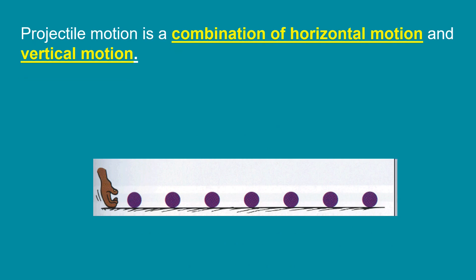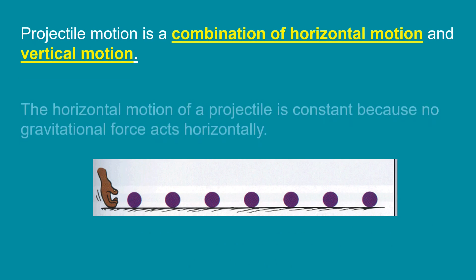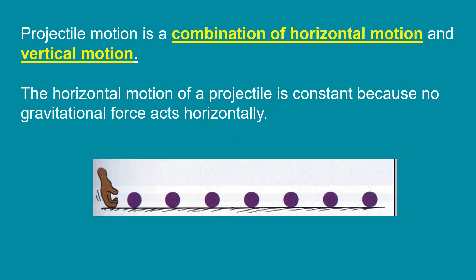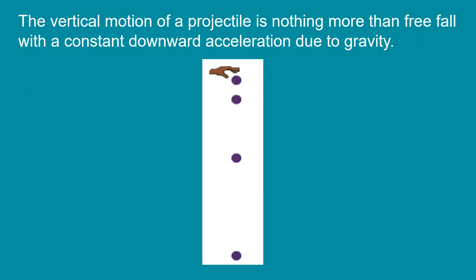Projectile motion is a combination of horizontal motion and vertical motion. The horizontal motion of a projectile is constant because no gravitational force acts horizontally. While the vertical motion of a projectile is nothing more than a freefall with a constant downward acceleration due to gravity,